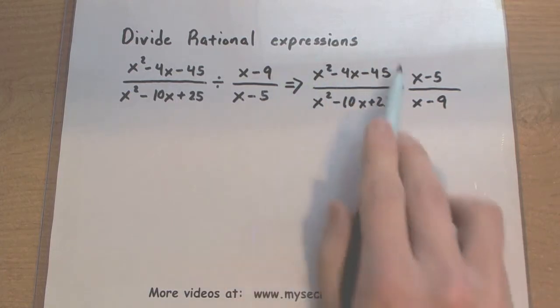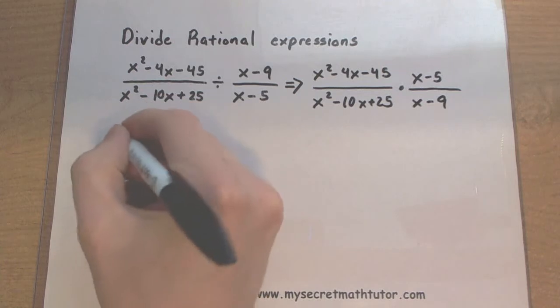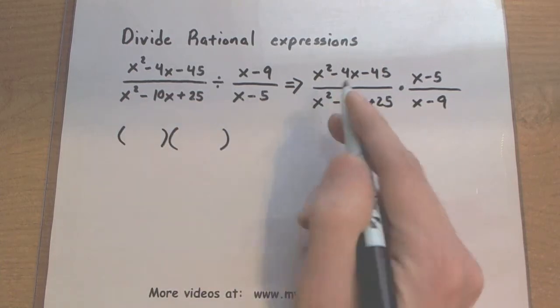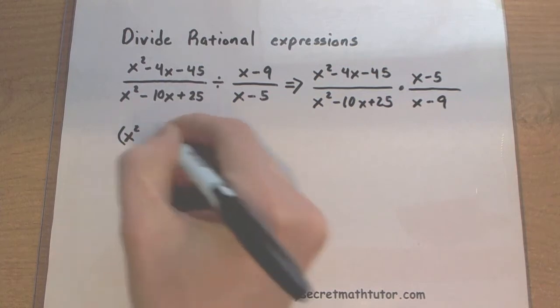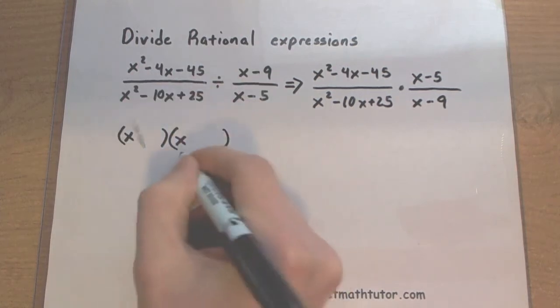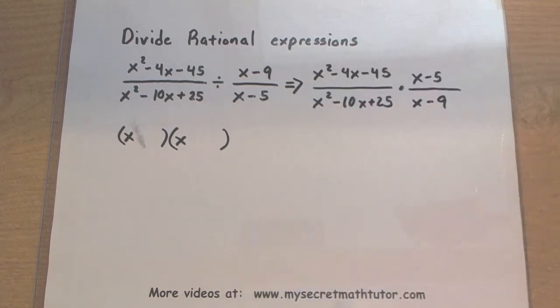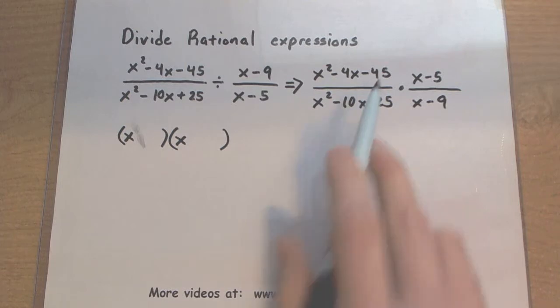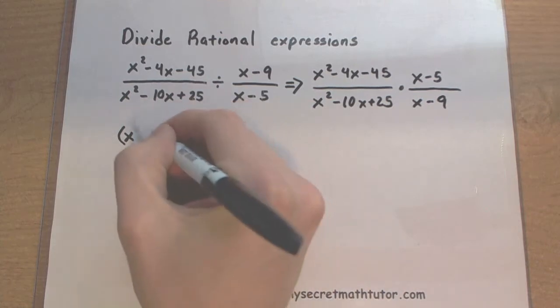Let's take this first one here and see if we can factor it. An x times an x will give me x squared. Now I need two numbers that multiply to be negative 45, but add to be negative 4. I'm thinking 9 and 5 are the ones that do it.